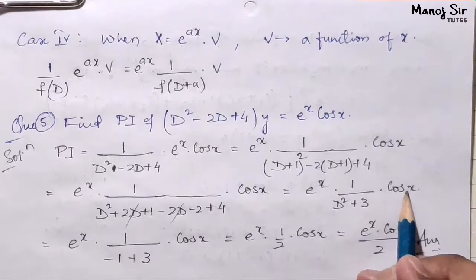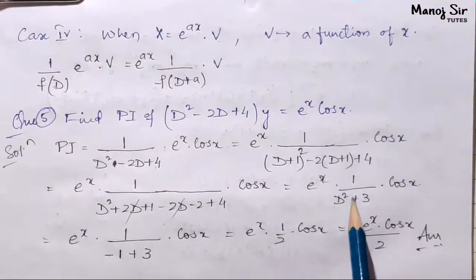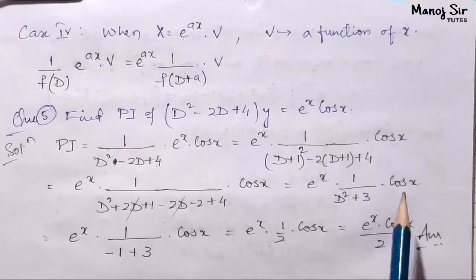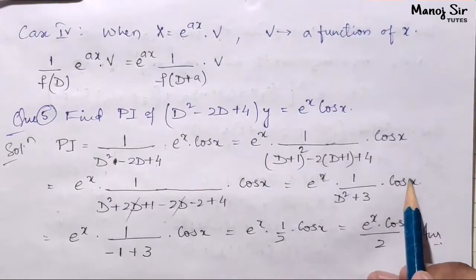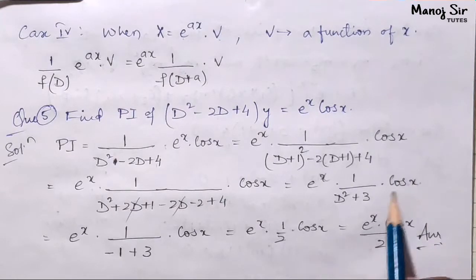In case 2, we replace D² with -a², where a is the coefficient of x. Here a = 1, so a² = 1, and -a² = -1. In place of D², we put -1.